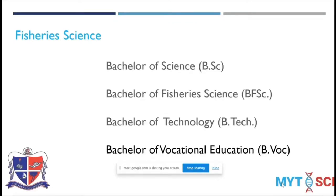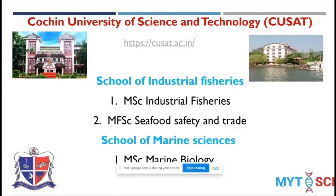In fishery science there are four major bachelor's degrees: Bachelor of Science, Bachelor of Fishery Science, B.Tech, and vocational education. Students with a Bachelor of Fishery Science can go for MFSc courses, B.Tech graduates can pursue M.Tech, and vocational students have their own options. For Bachelor of Science students there are more confusions, so I'll be providing institutes and courses they can pursue for their master's and research.